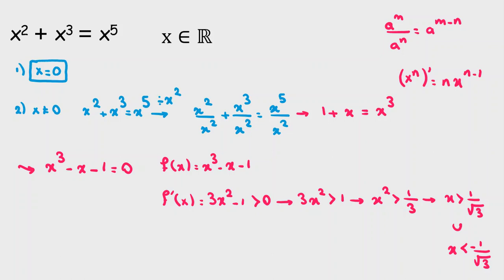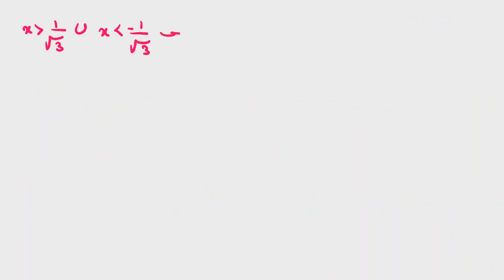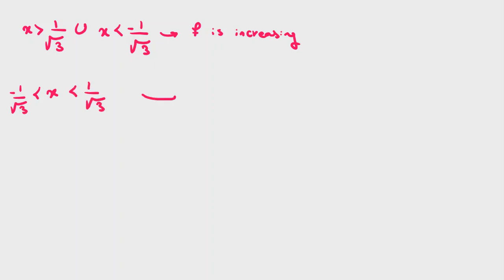So we conclude: f prime is positive and f is increasing when x is greater than 1 over root 3, or x is less than negative 1 over root 3. Otherwise, if x is between negative 1 over root 3 and 1 over root 3, then f prime is negative and f is decreasing.